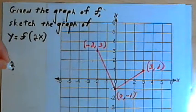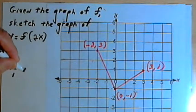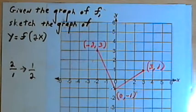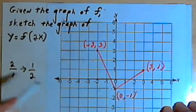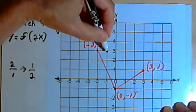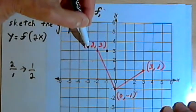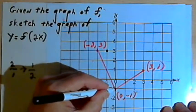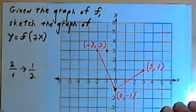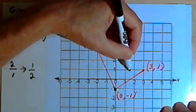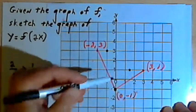So if I think of 2 as a fraction, 2 over 1, I can find its reciprocal by flipping that fraction over and turning it into 1 over 2, or 1 half. So what I'm going to do is take each of the x-coordinates and multiply them by 1 half. So 1 half of negative 2 is negative 1. That gives me a point here at (-1,3). 1 half of 0 is still 0. So this point on the y-axis is not going to move. And 1 half of 3 is 1 and a half. So I'll have a point here at (1.5,1).